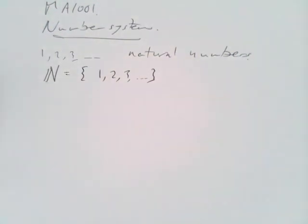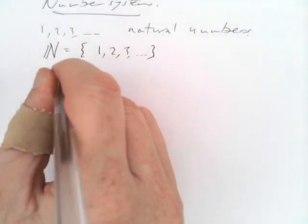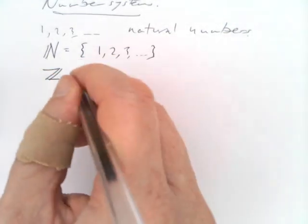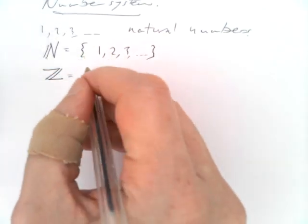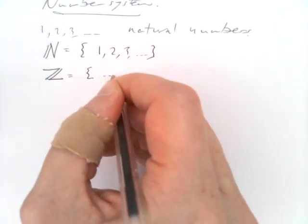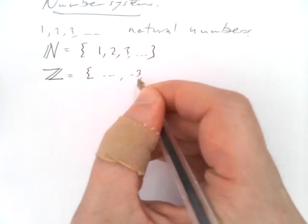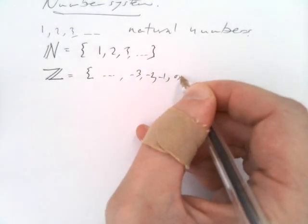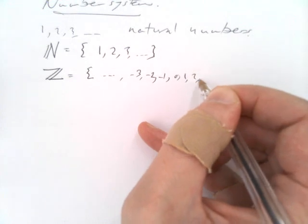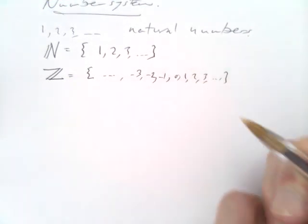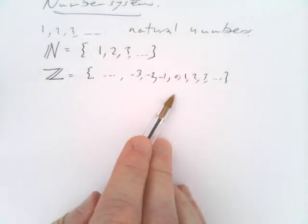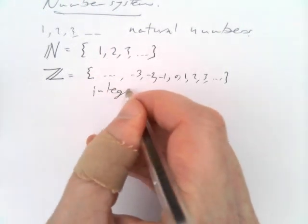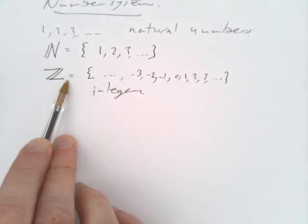Similarly, we can have the integers. This is capital Z with two diagonals. It's the set of all numbers ..., -3, -2, -1, 0, 1, 2, 3, ... going on forever in both directions. These are the integers, and Z is the set of integers.